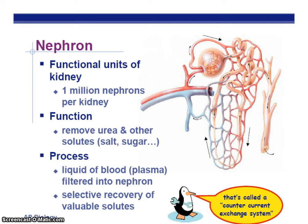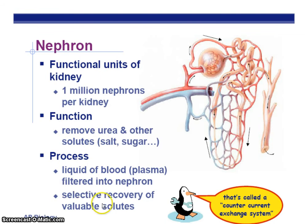There are about a million nephrons per kidney, and the function is to remove urea and other waste molecules. This process is going to be filtration and then selective recovery of the good stuff that you want back in your blood.